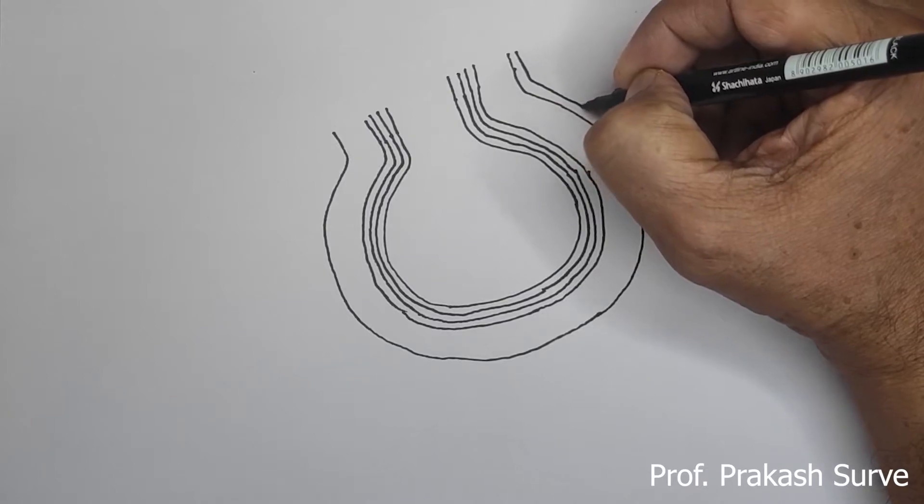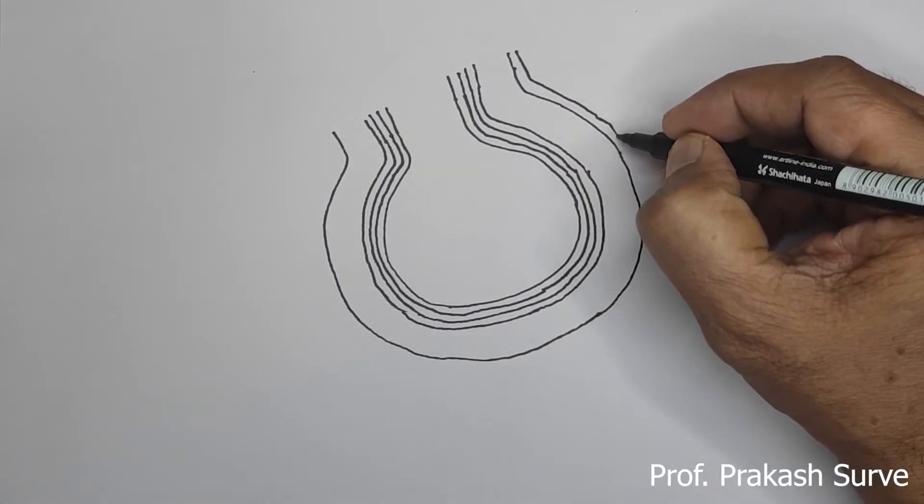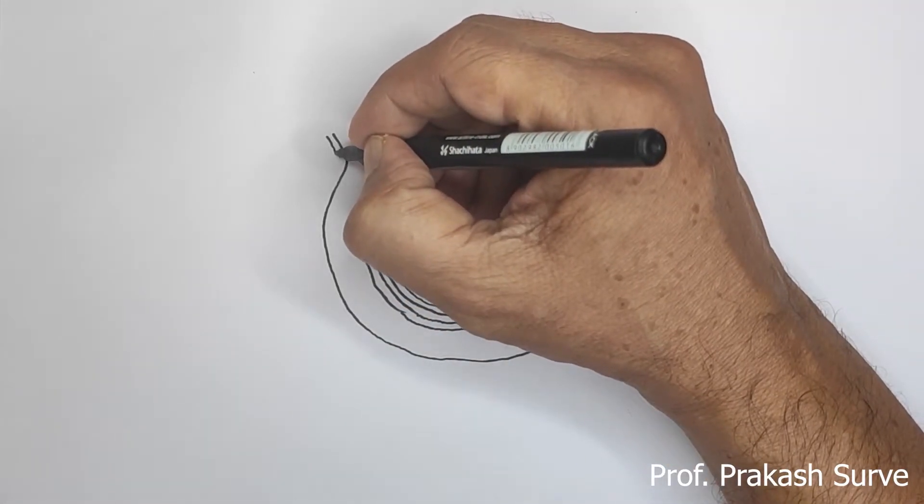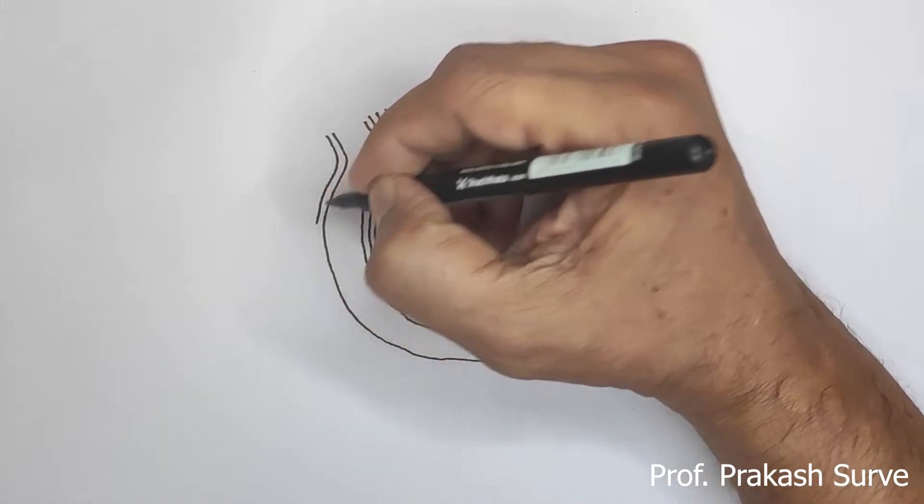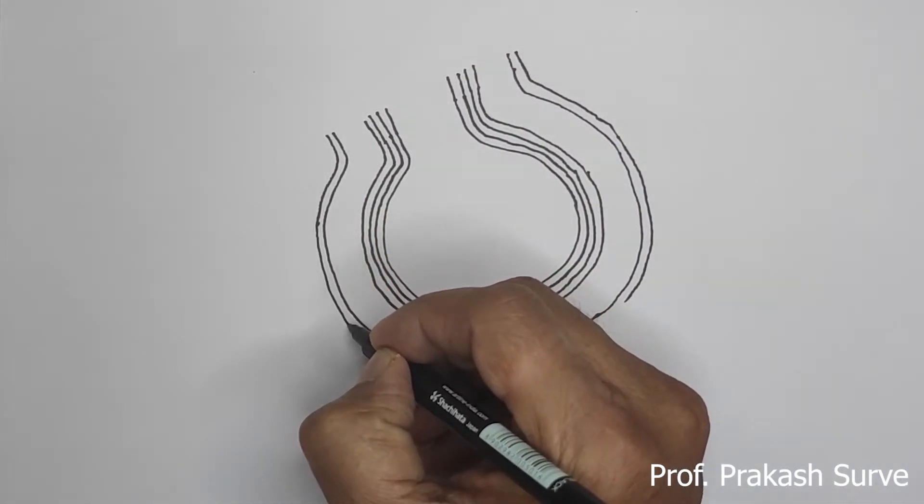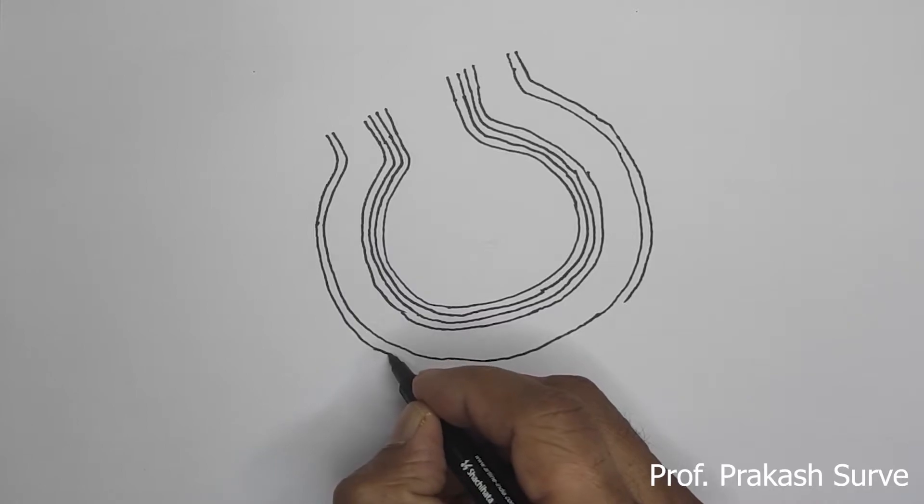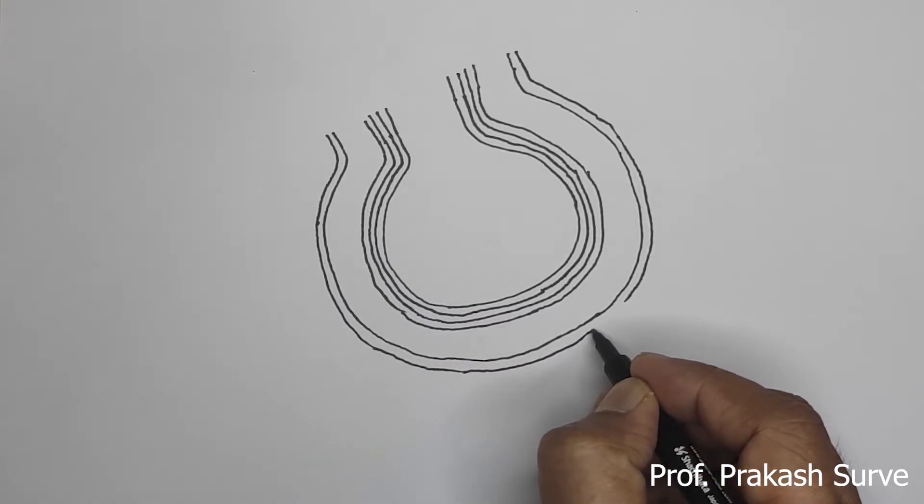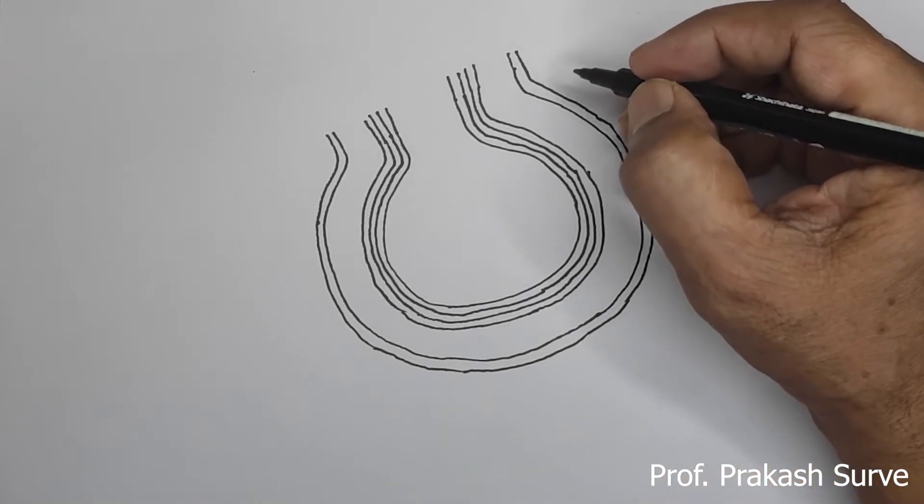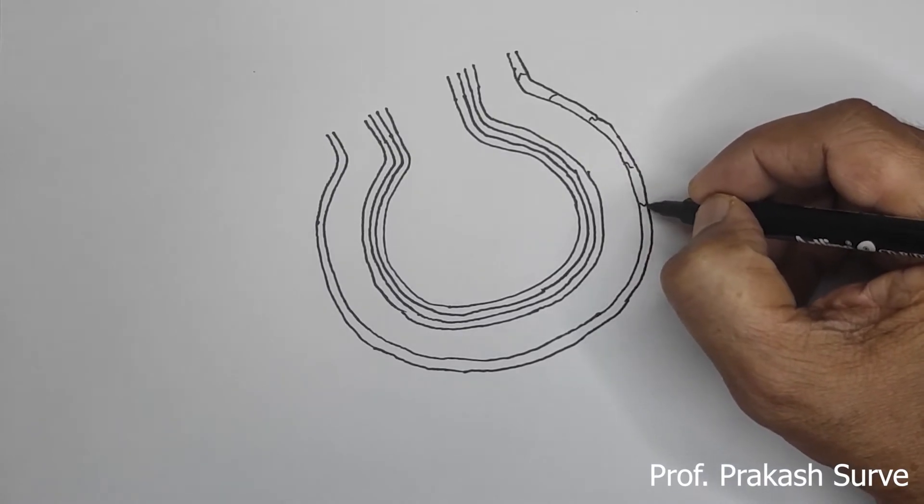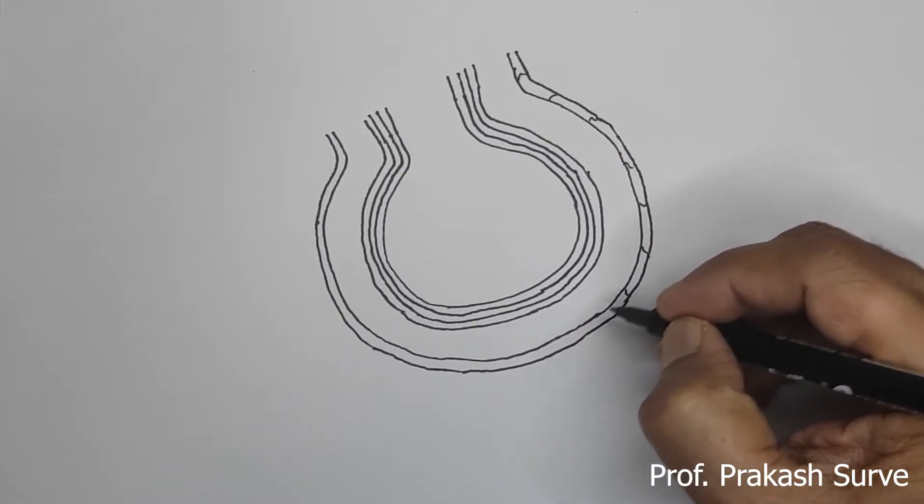Now we'll draw the corresponding line for the membrane which is for the capillary. Continue, attach to the previous one. Now we'll make the cells like that, which forms simple squamous epithelium.